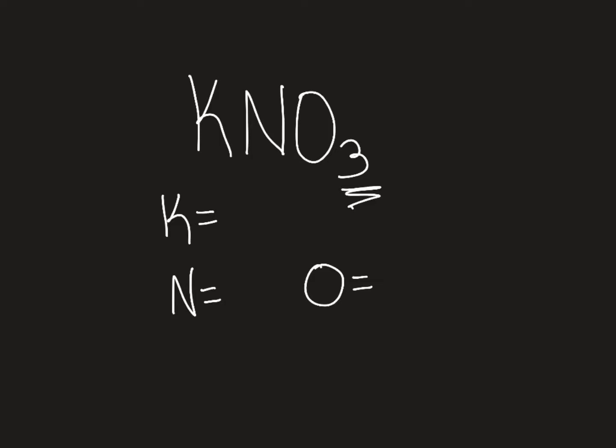Then I write how many I have next to each. Potassium — I just have one, because there's an understood one there. Nitrogen — I have one. And oxygen — I have three, because of the subscript three. So even though there is no subscript written for potassium and nitrogen, it is an understood one. Not too bad — let's look at another one.